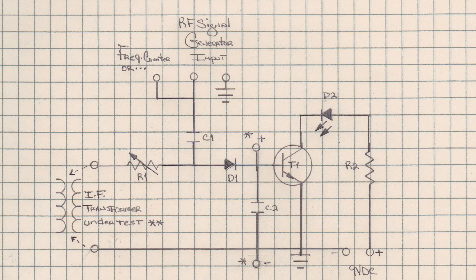Again, the transformer under test would be tested on the primary and secondary. And you guys can see the frequency counter or oscilloscope with the built-in counter option is coupled in at the same location as the RF signal generator input.